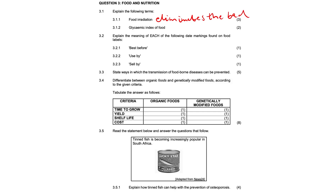Next, the glycemic index of food. What if I pronounced that as 'glycamic'? Would you guys just lose faith in me as your YouTube tutor? Would you unsubscribe? 3.1.2 — it measures how much food containing carbohydrates will raise the blood glucose level on a scale of 1 to 100. So just carbs raising blood glucose.